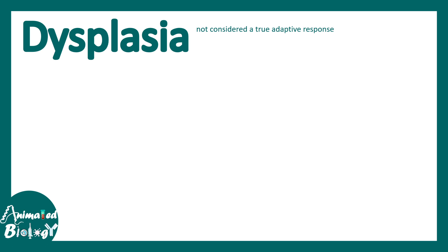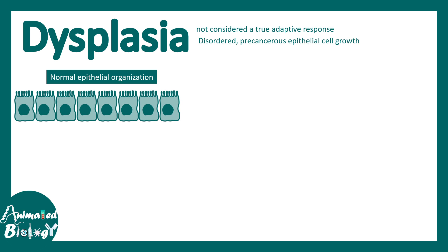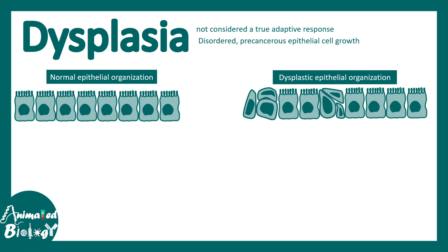Now let's talk about dysplasia, which is not actually an adaptive response — dysplasia happens when things are really wrong. It is a disordered and precancerous epithelial cell growth. This is a normal organization of an epithelium, and this is how dysplastic epithelium looks — some cells are normal but many have changed their shape and size, becoming totally different.